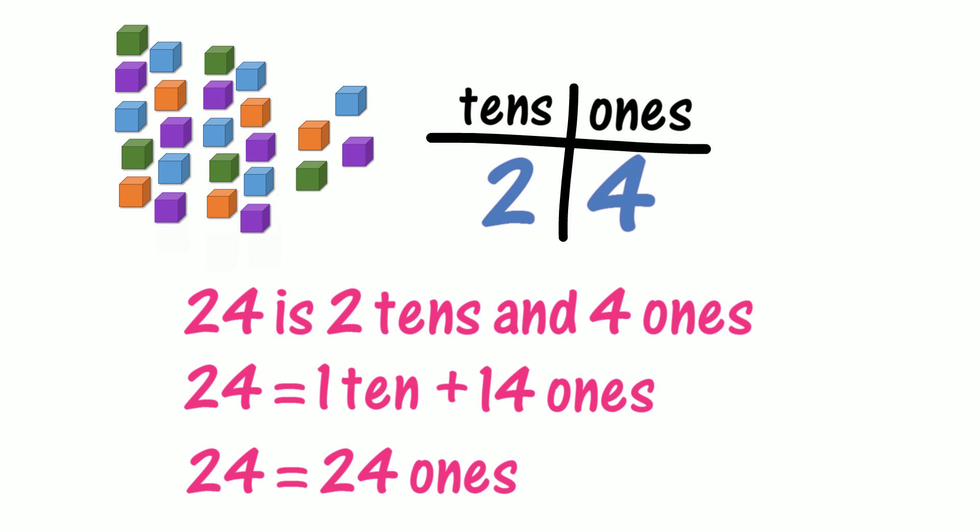Can we see the 24 ones by reading across the columns on the place value chart? We can read across the columns on a place value chart and see the 24 ones. So now we've described 24 using non-standard place value in a way that can be read across the columns on a place value chart.